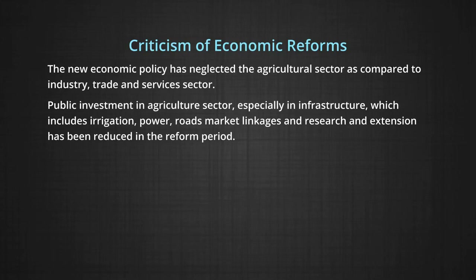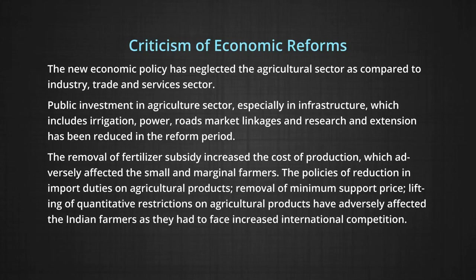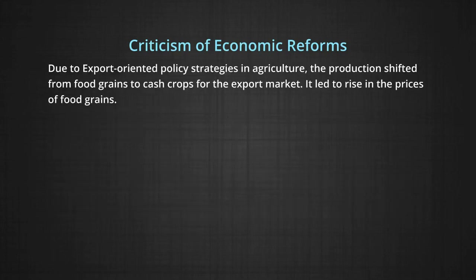Public investment in agriculture, especially in infrastructure including irrigation, power, roads, market linkages, and research and extension, has been reduced in the reform period. The removal of fertilizer subsidy increased the cost of production, which adversely affected small and marginal farmers. The policies of reduction in import duties on agricultural products, removal of minimum support price, and lifting of quantitative restrictions on agricultural products have adversely affected Indian farmers, as they had to face increased international competition.